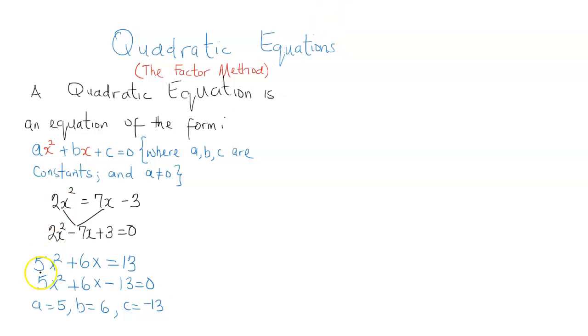So we are going to be relying on this knowledge of a, b, and c to solve a quadratic equation using the factor method. So let's solve x squared minus 5x minus 14 equal to zero.